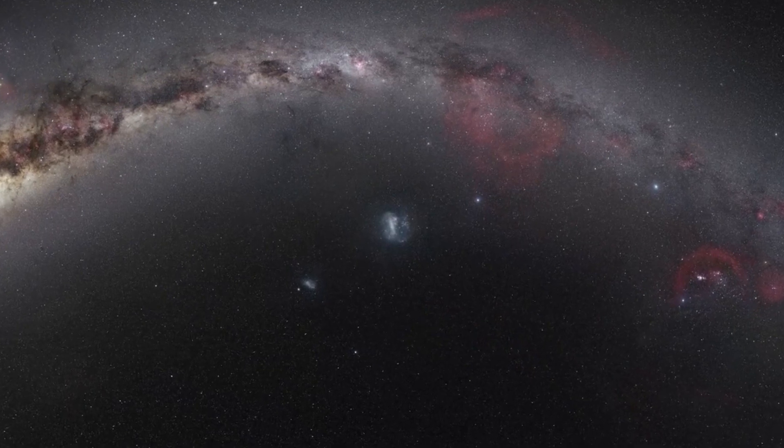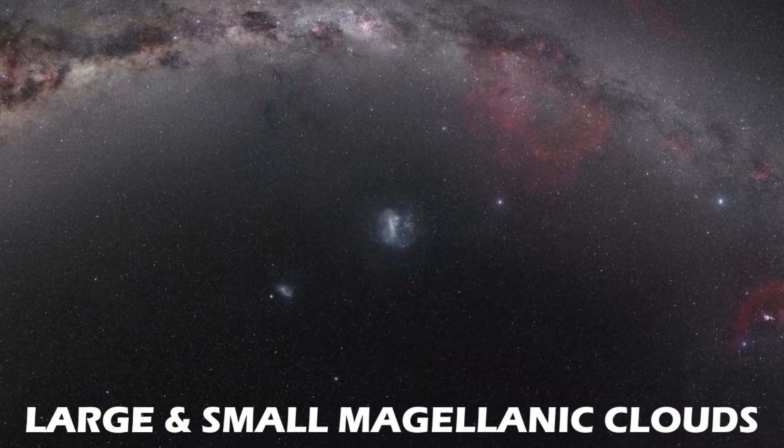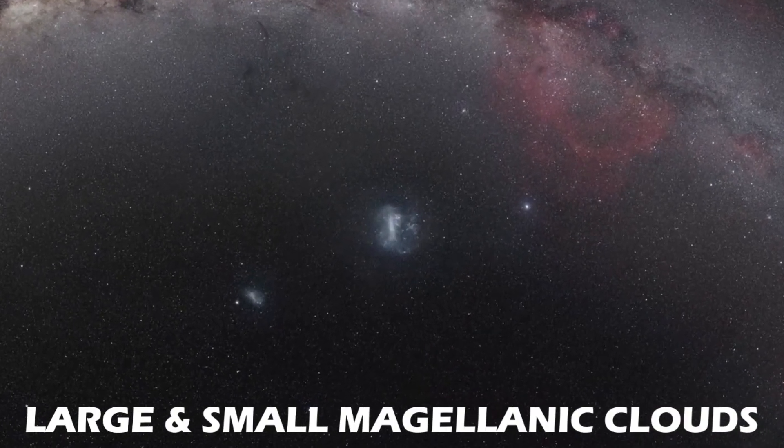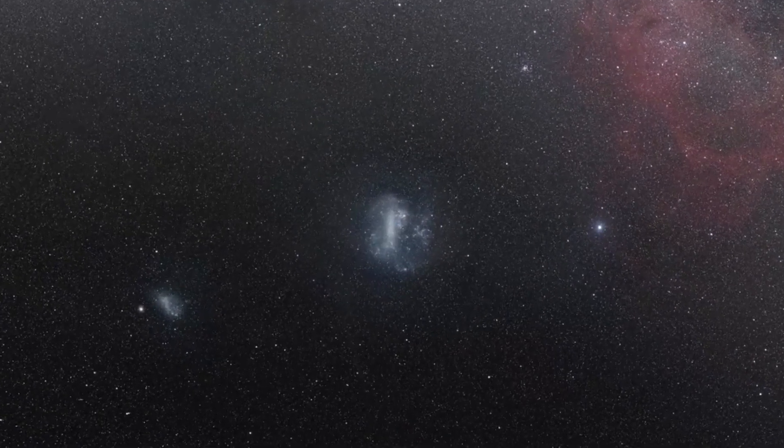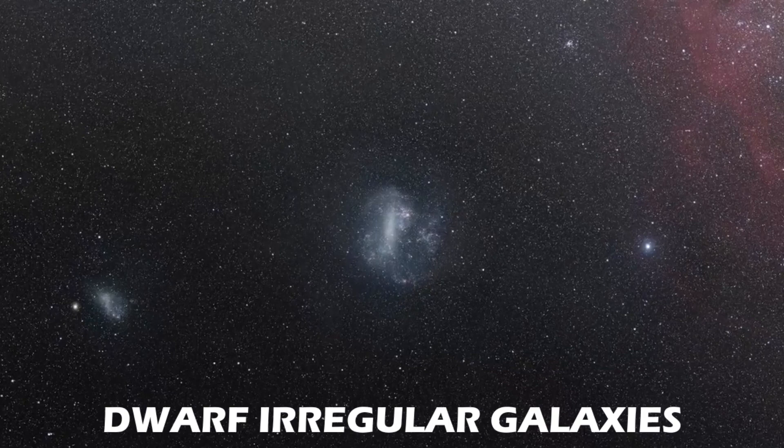The most prominent of them all are the Large and the Small Magellanic Clouds. Visible from the Southern Hemisphere, the Large and the Small Magellanic Clouds are classified as Dwarf Irregular Galaxies.